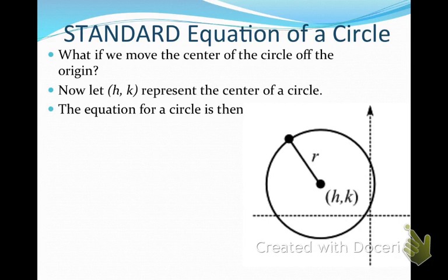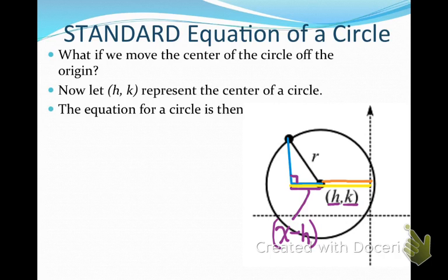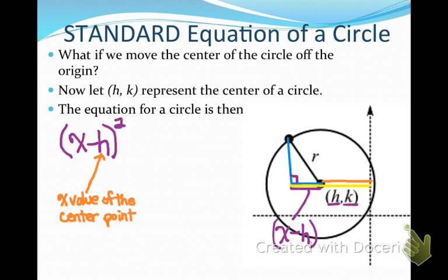Again, let's use the Pythagorean Theorem and draw a right triangle. The whole yellow length is our x value, but the orange part is the value of h. So the purple side length is really x minus h. Instead of x squared, in our equation for a circle, we're going to put the quantity x minus h squared, where h represents the x value of the center point.